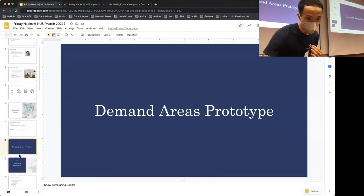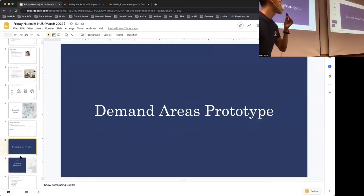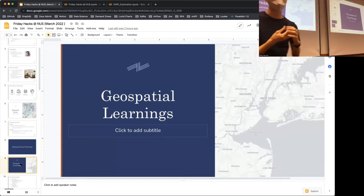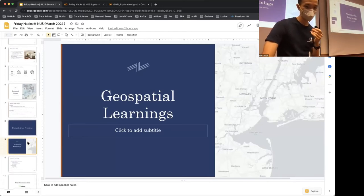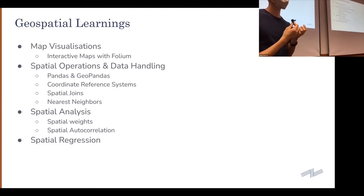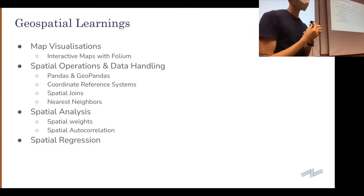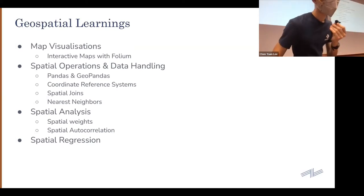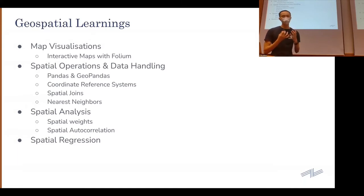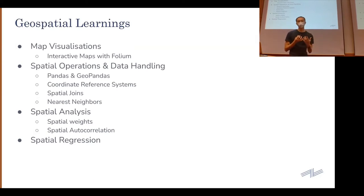So this really forms the motivation of what I'm about to share today — how we approach this problem and how we arrived where we are now. This will be done through a section called Geospatial Learnings, split into four parts. The first two parts cover map visualization and spatial operations and data handling. The next two parts will be spatial analysis and spatial regression. The hope is that after going through this, you'll have a basic understanding of what geospatial analytics entails and feel confident enough to begin developing yourself.